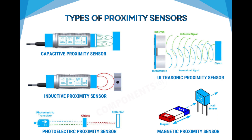Inductive switches generate an electromagnetic field and detect changes when a metal object enters the field. Capacitive switches sense changes in capacitance when an object approaches. Ultrasonic switches emit sound waves and measure the time taken for the echo to return. Photoelectric switches use a light beam and detect the presence of an object when the beam is interrupted.